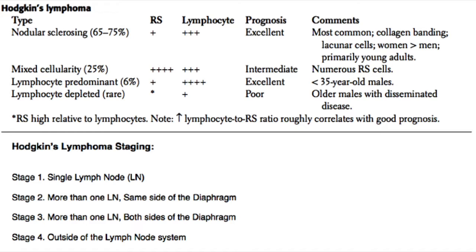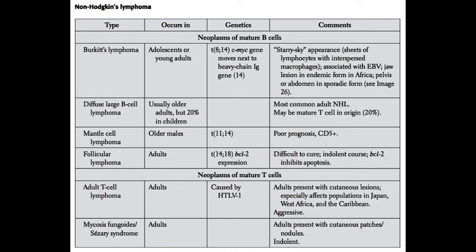For Hodgkin's lymphoma staging — which is sometimes tested on Step 1 — the system is straightforward: Stage 1 is a single lymph node; Stage 2 is more than one lymph node but on the same side of the diaphragm; Stage 3 is lymph nodes on both sides of the diaphragm; Stage 4 means the disease is outside the lymph node system, in another organ, which automatically makes it Stage 4.